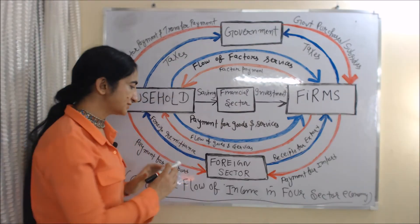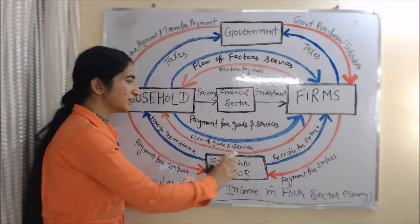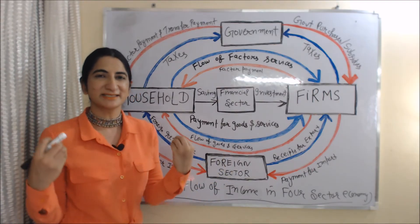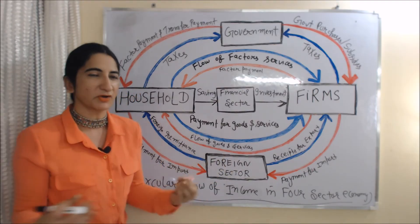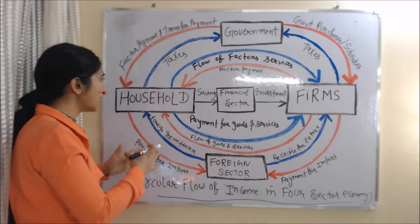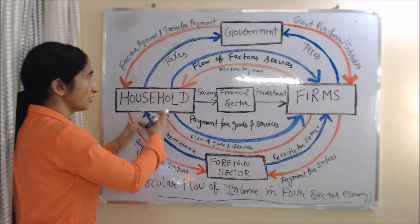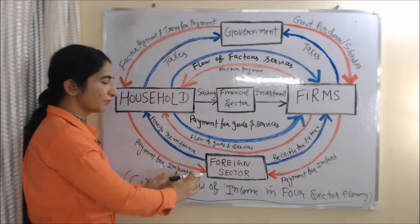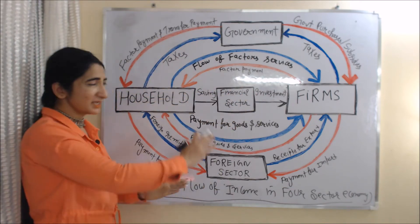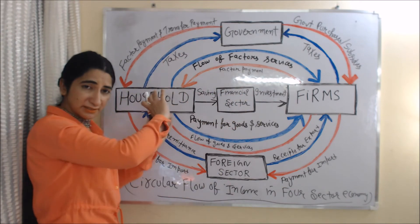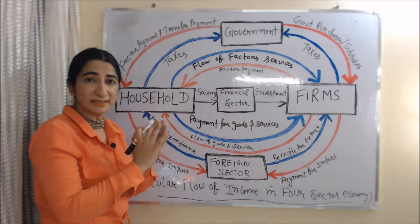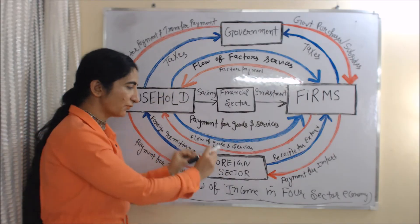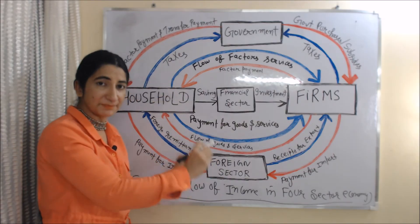Now we will see the circular flow of income in a four sector economy, also called an open economy. Here, apart from including the household sector, government, and firms, we also include the foreign sector. Everything is the same as we earlier discussed — the only new thing we add here is the foreign sector.